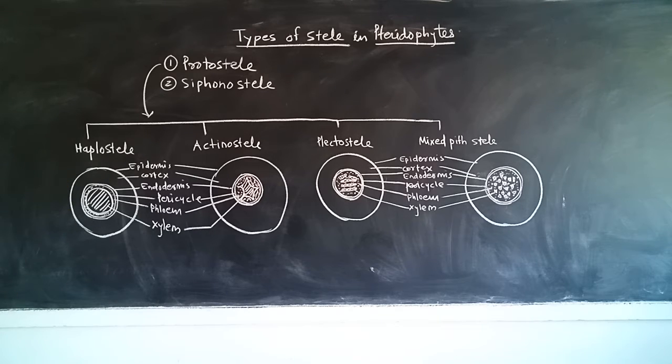First one, haplostele. It consists of the central circular mass of xylem element, and it remains surrounded by a phloem element. Outside the phloem is pericycle, then endodermis, then cortex and epidermis.